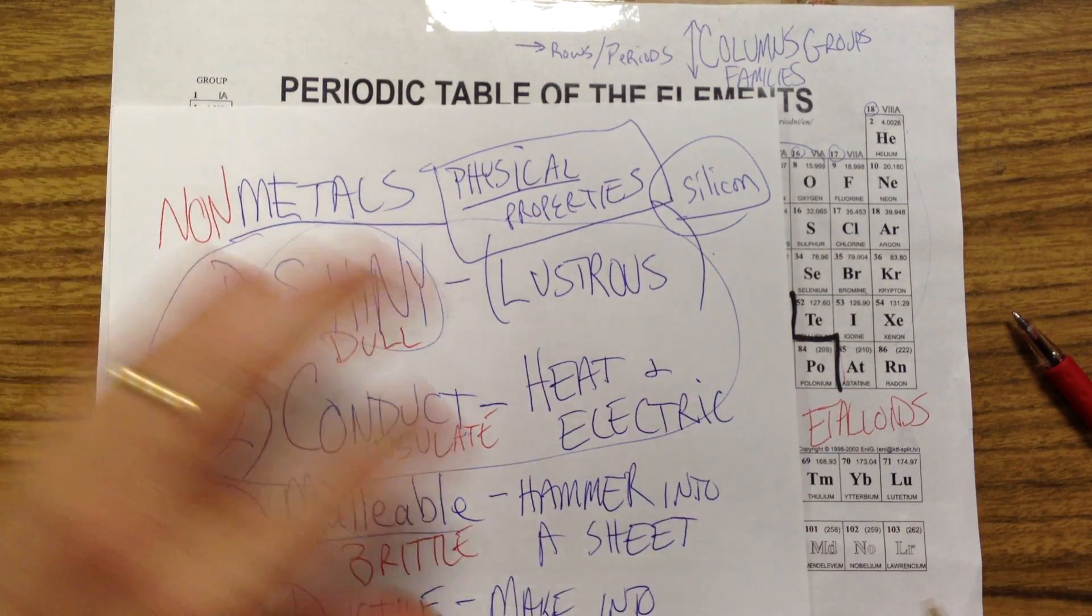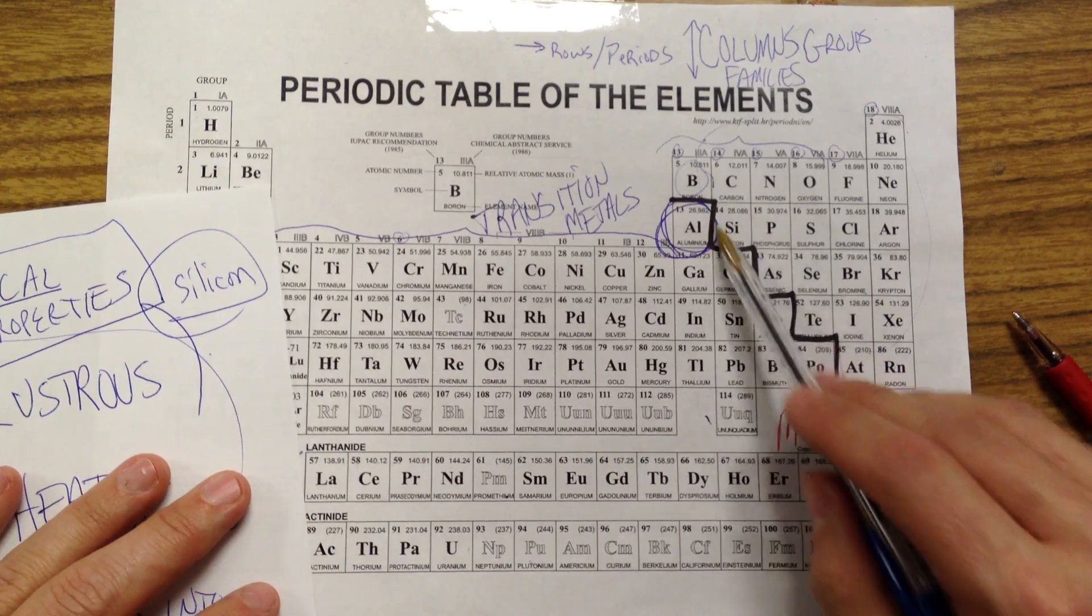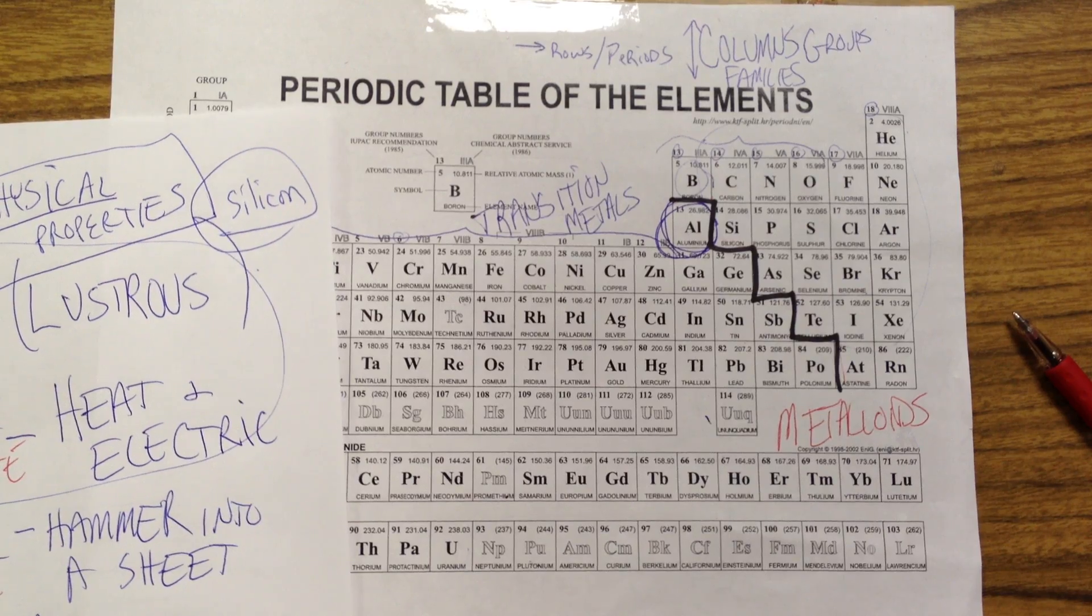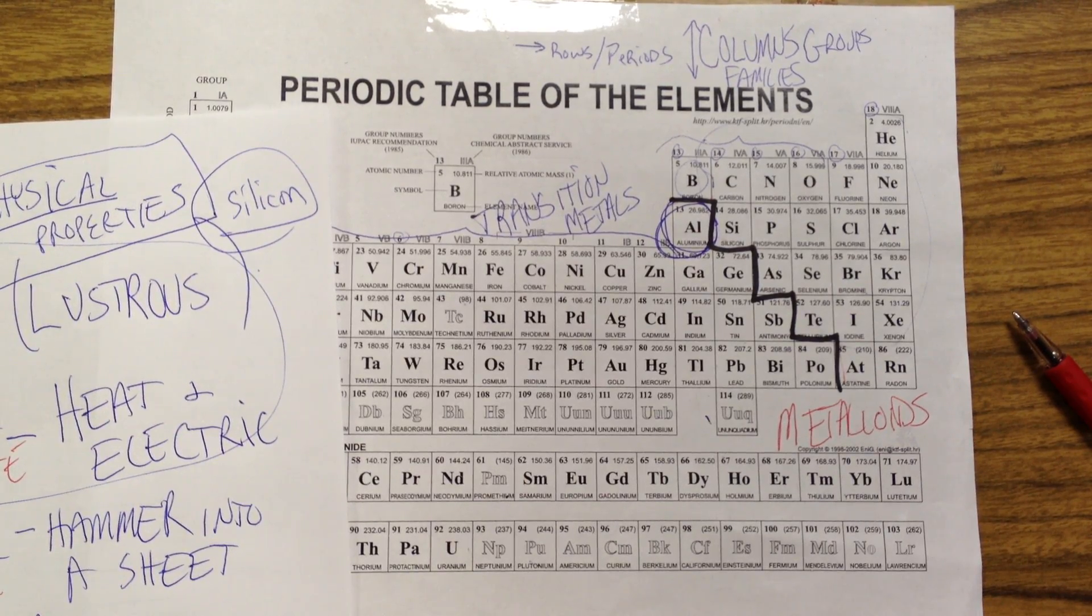It is shiny. And so you might think, well, it's sort of an in-between thing. And so we look over here, and silicon, well, it's right on that line. So a lot of these metalloids actually have properties in between metals and non-metals.